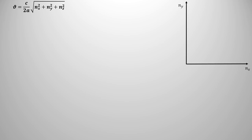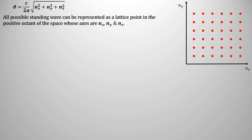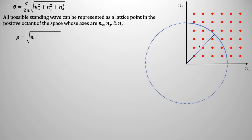All possible modes can be represented by points in a coordinate system made up of n_x, n_y, and n_z, where each axis represents the number of modes in a particular direction. In this coordinate system, if we draw a sphere of radius rho, then rho equals the square root of (n_x² + n_y² + n_z²), analogous to r equals the square root of (x² + y² + z²) in Cartesian coordinates. Therefore, rho equals 2a·nu / c, and frequency nu equals c·rho / (2a).